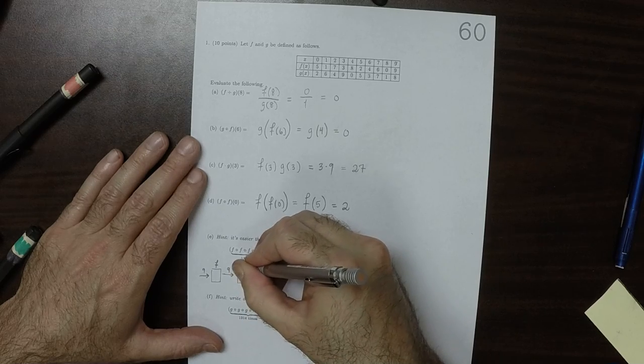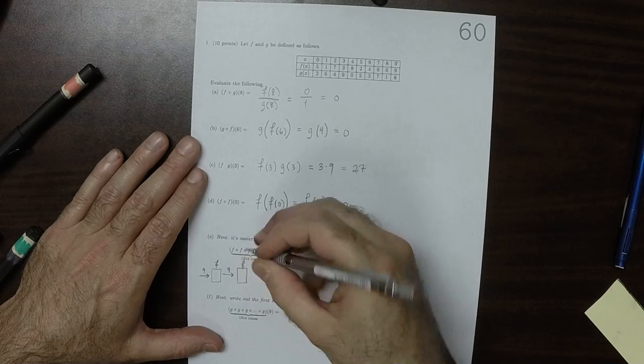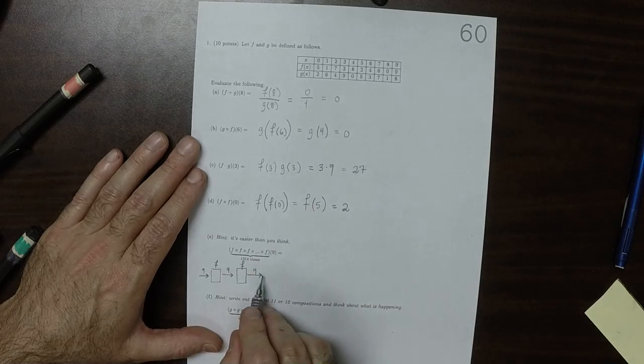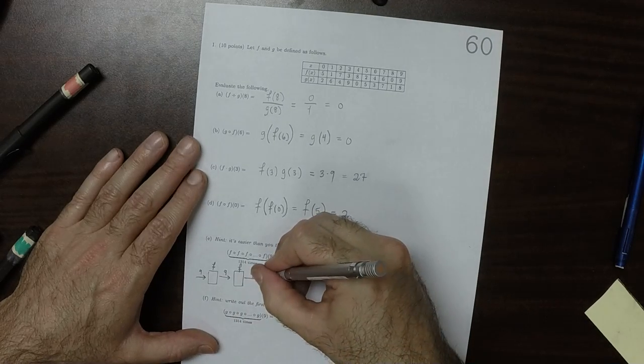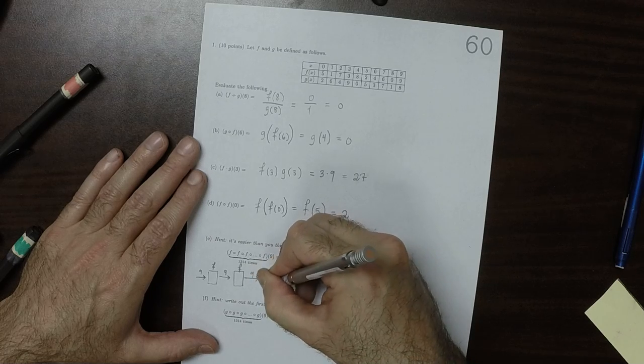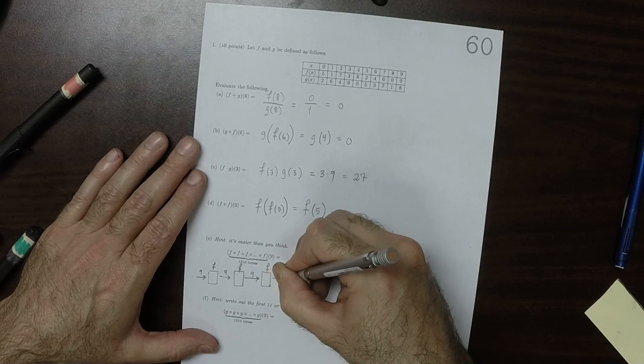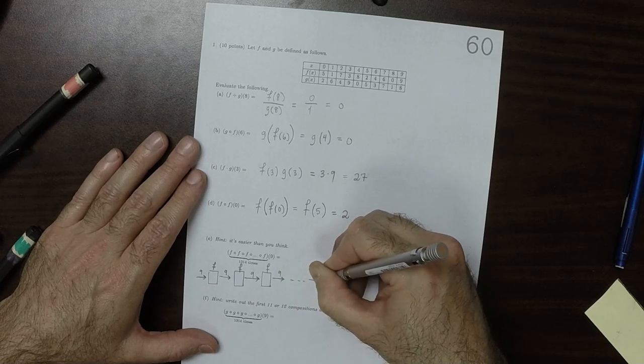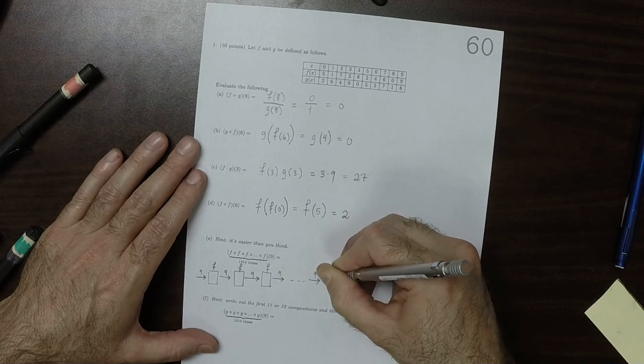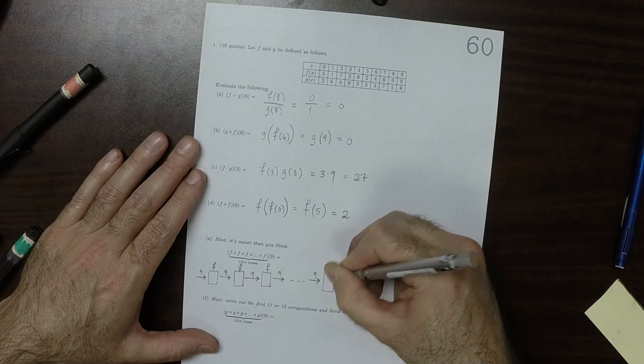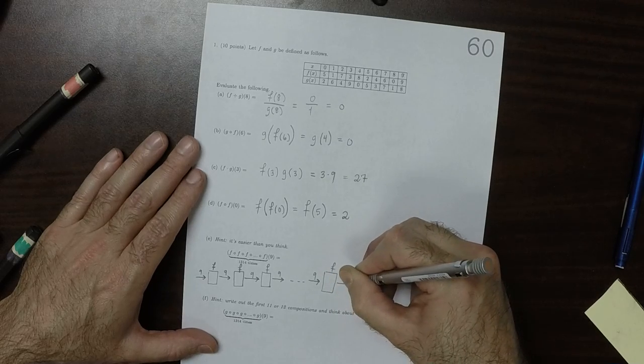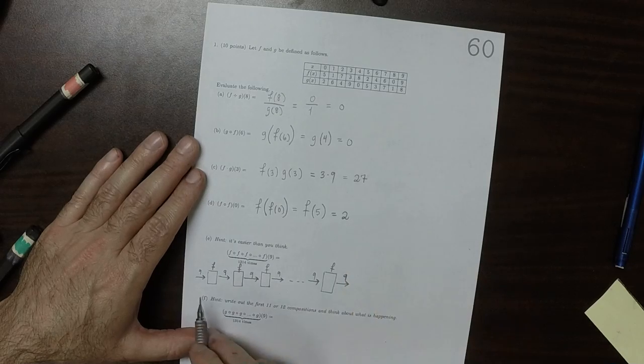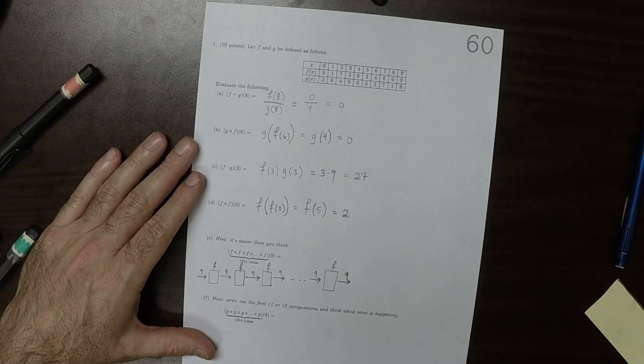And the observation that I wanted you to make is that no matter how many times you put a 9 into the f machine, it's always going to be a 9, even if you put 1,314 of them in a row. So the answer is just 9.